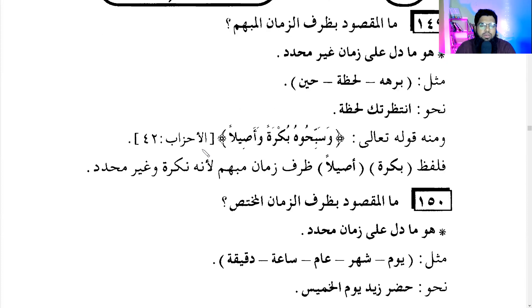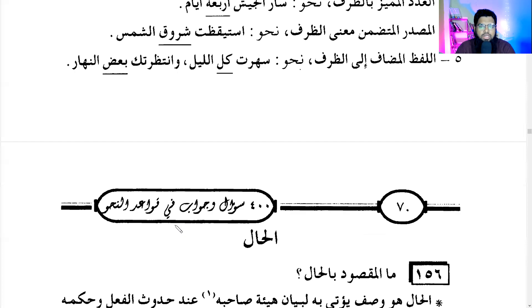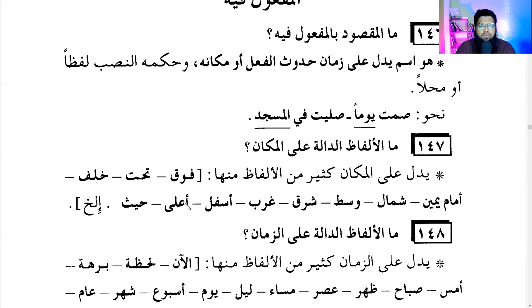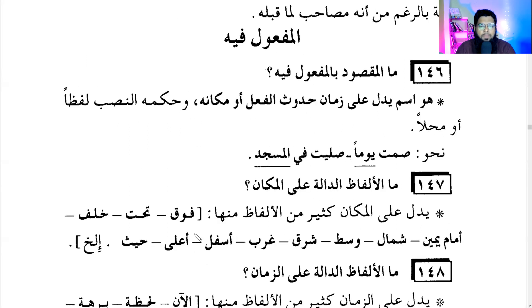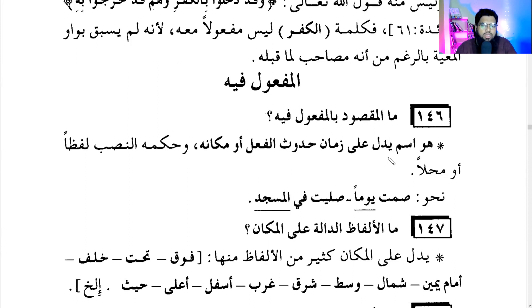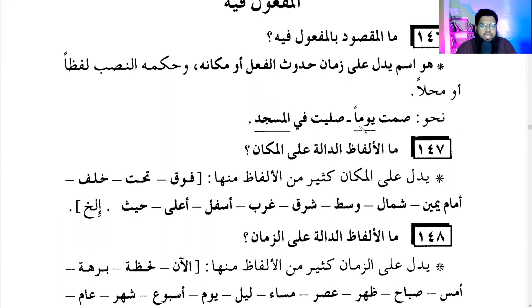Then we have al-maf'ul fih, also called al-zarf. Insha'Allah ta'ala we will also do this today. What is maf'ul fih? It tells you time and place. Al-maqsoodu bil-maf'ul fih: it is a noun that indicates the time of the occurrence of the fa'il or the place of it. Its ruling is nasb — either with visible fatha or in position. For example: 'Sumtu yawman' — I fasted a day; 'Sallaytu fil-masjidi' — I prayed in the masjid. In the second example you cannot see the fatha, so we say it is zarf fi mahalli nasb.